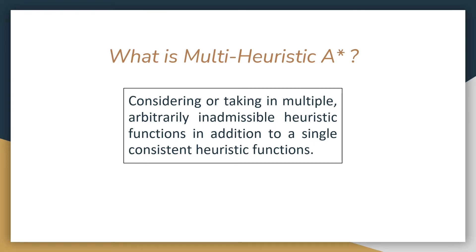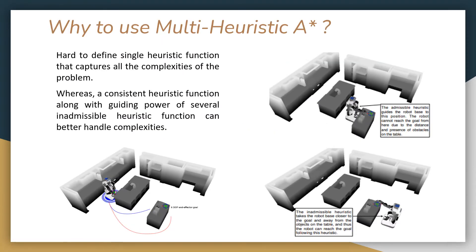This is basically the overview of what multi-heuristic A star is. In previous researches it has been observed that finding a single heuristic function that captures all the complexity of the problem is difficult. Furthermore, it is hard to ensure that heuristics are admissible and consistent, which is necessary for A star-like search algorithms to provide guarantees on completeness and bounds on suboptimality.